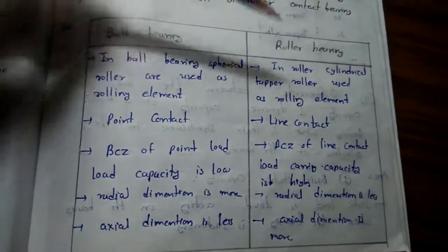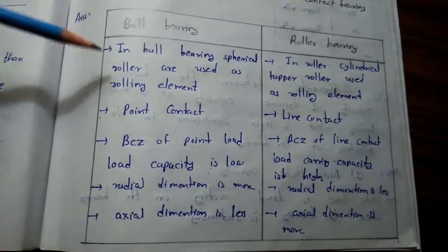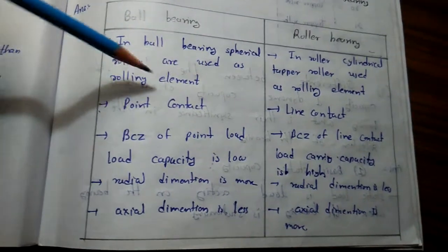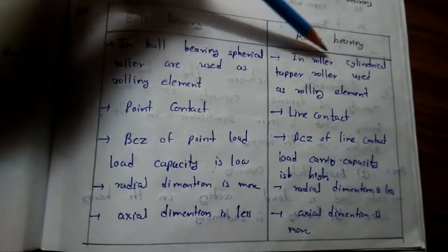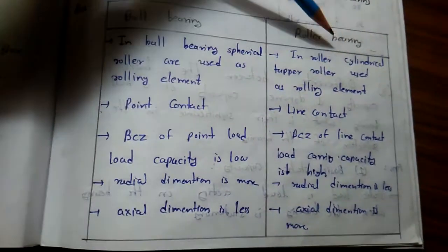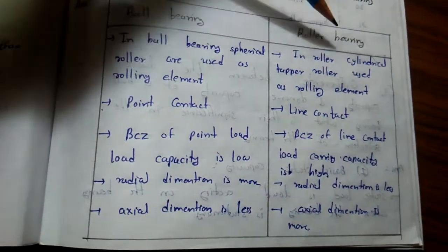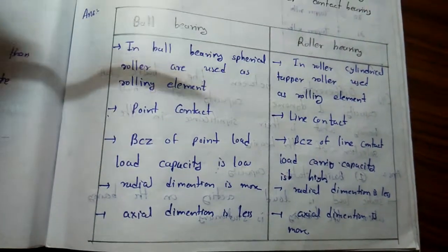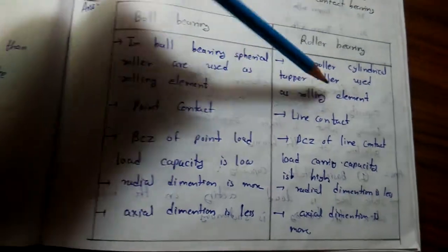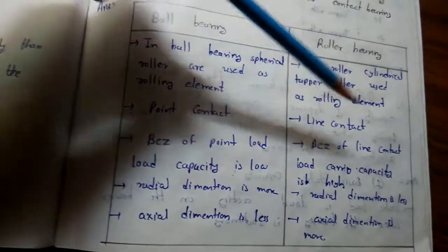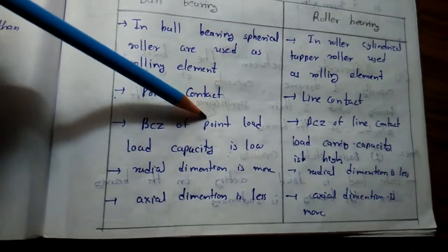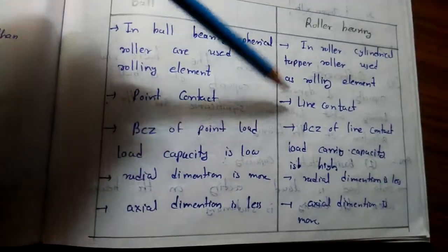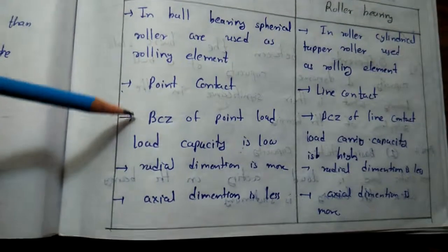The difference between ball bearing and roller bearing: in ball bearing, balls are used as the rolling element, and in roller bearing, taper rollers are used as the rolling element. Point contact is used in ball bearing, and line contact is used in roller bearing.